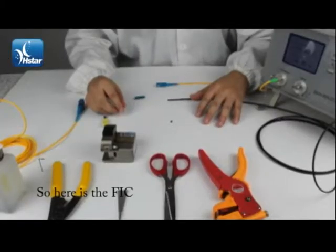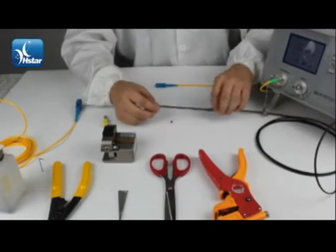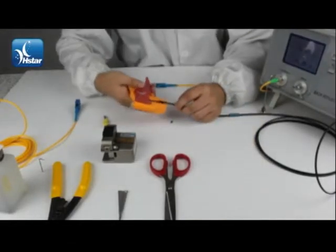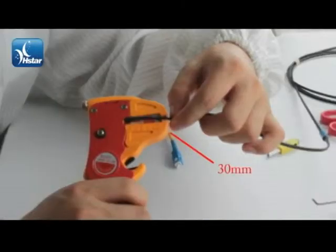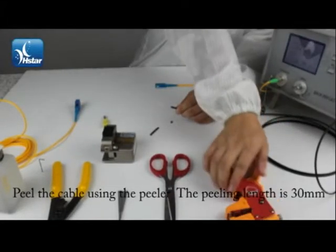Here is the FIC. Plug in the tail cover onto the optical fiber. Peel the cable using the peeler. The peeling length is 30 mm.